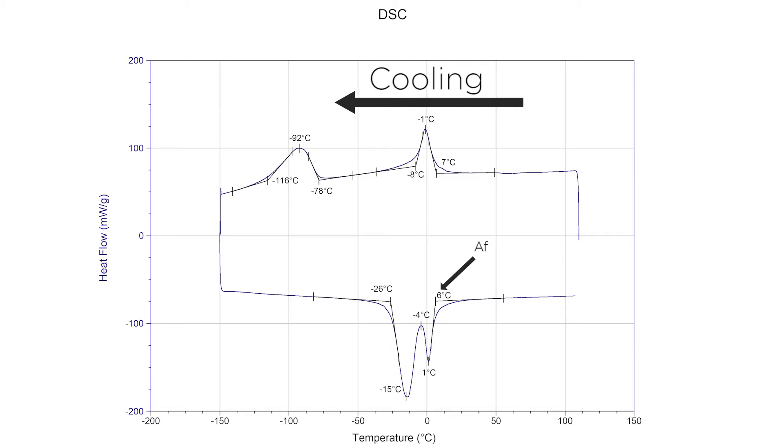So the first peak that we encounter is austenite to R phase transition, and the second peak that we encounter is the R phase going into martensite upon cooling.